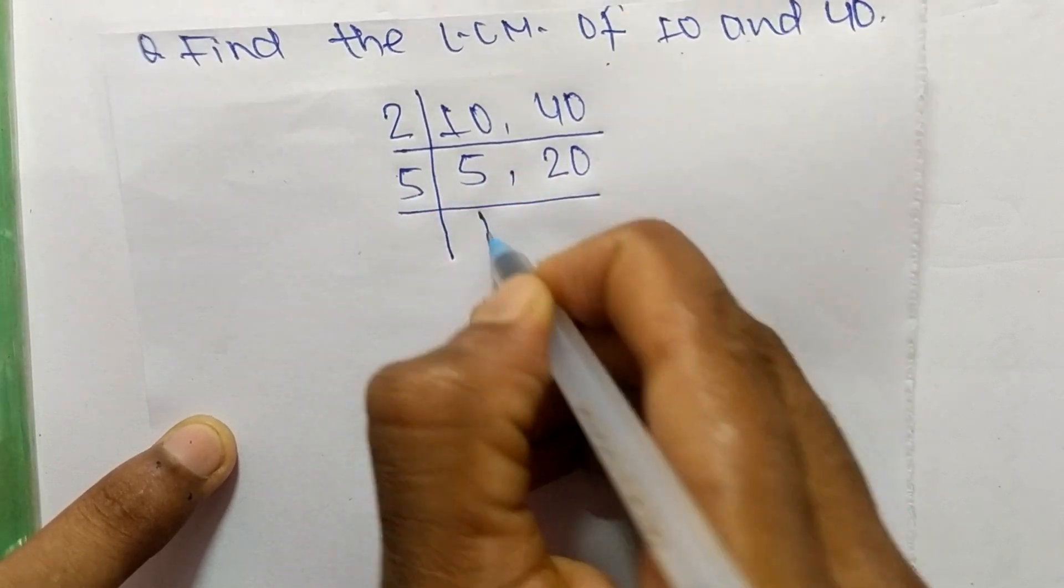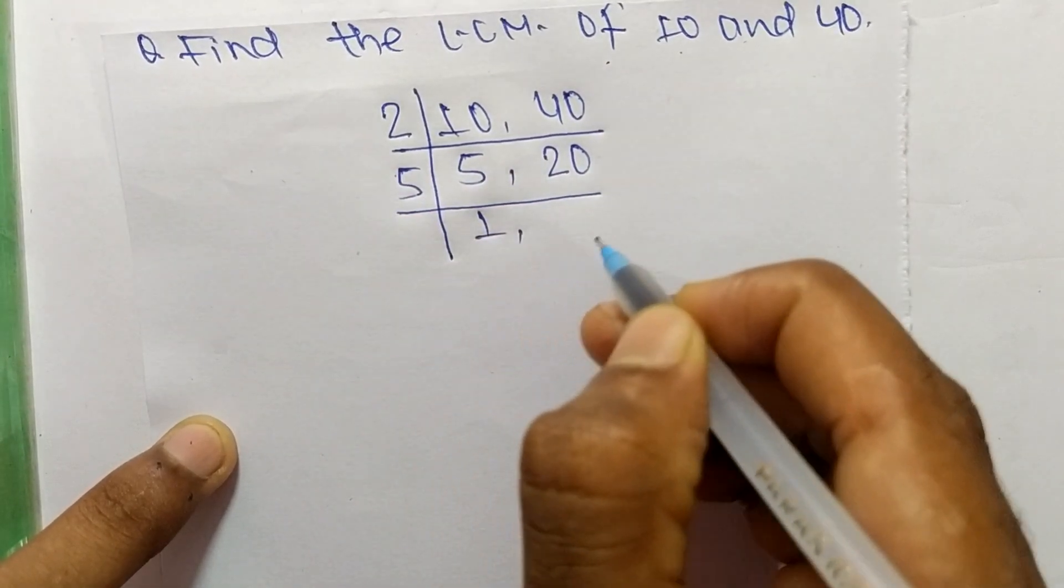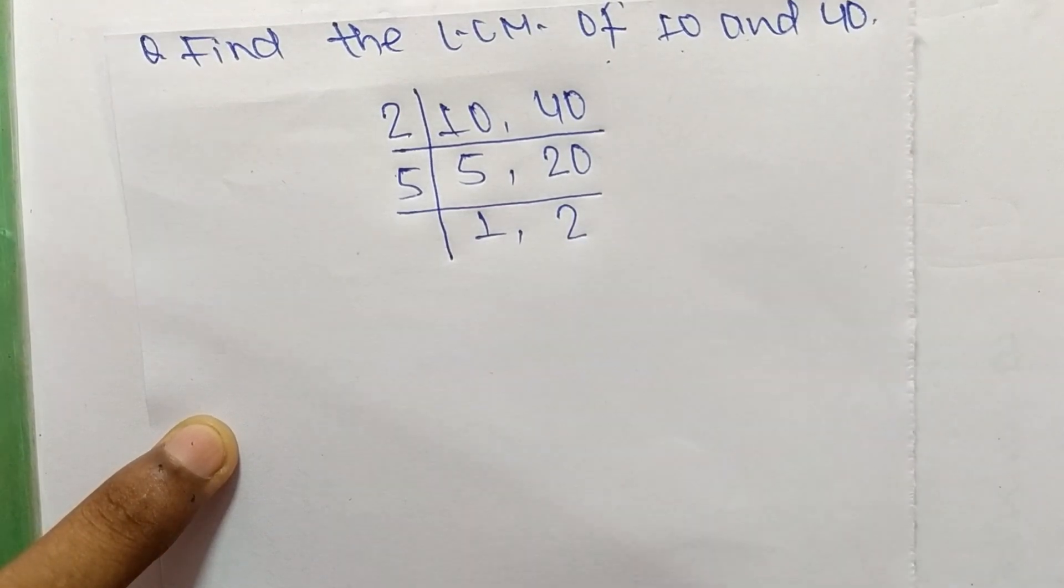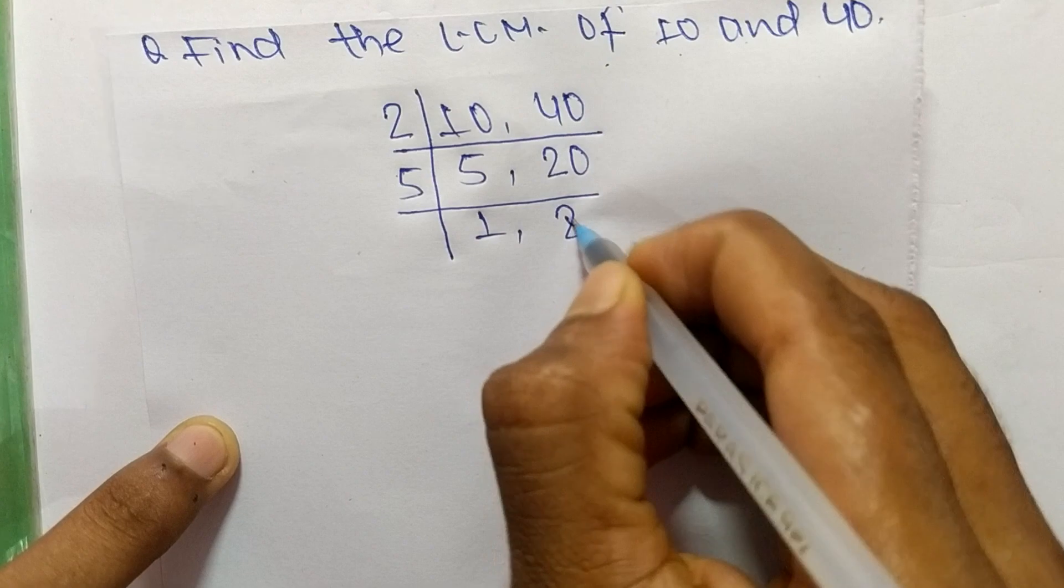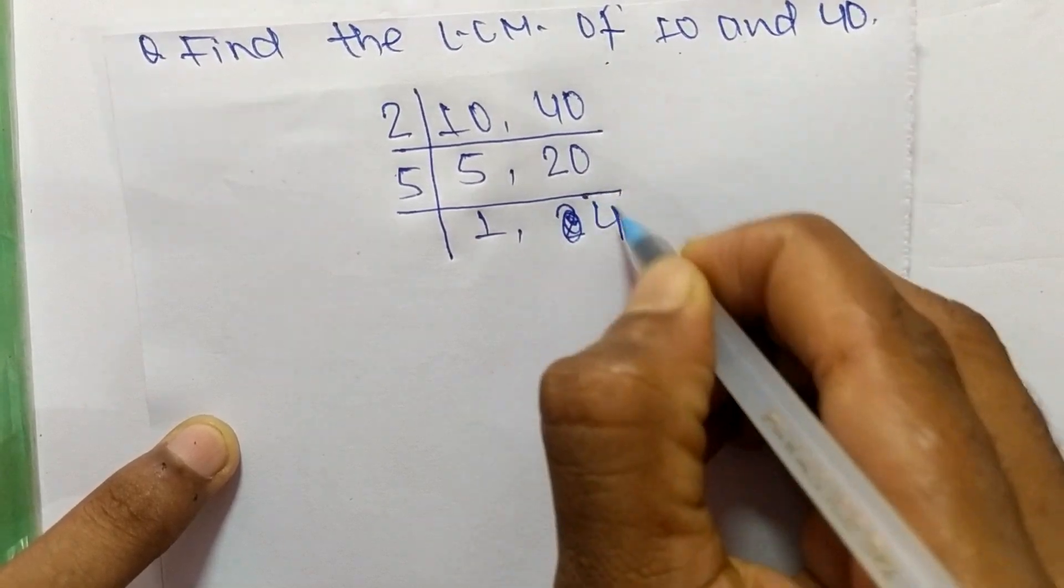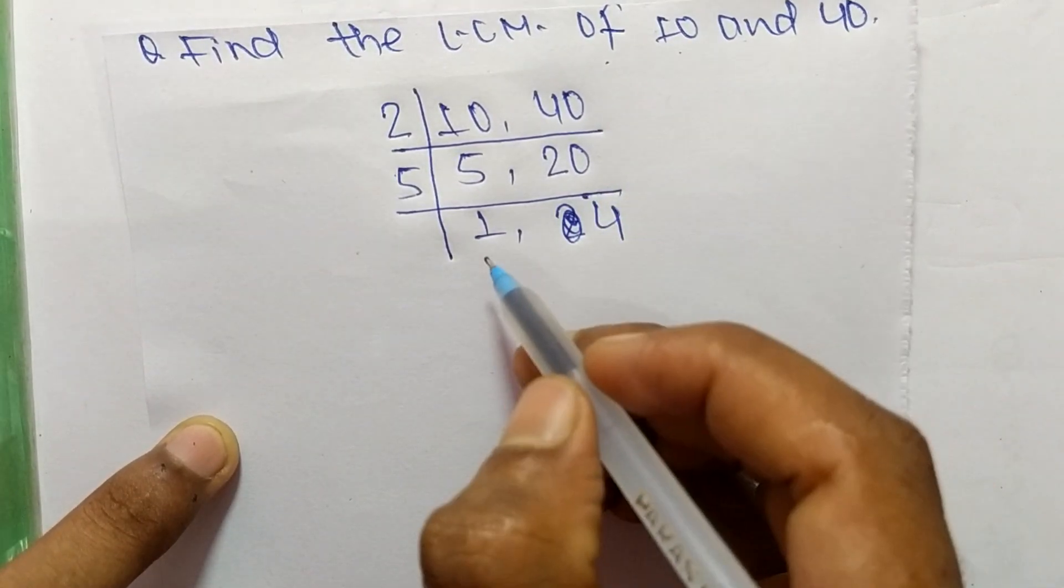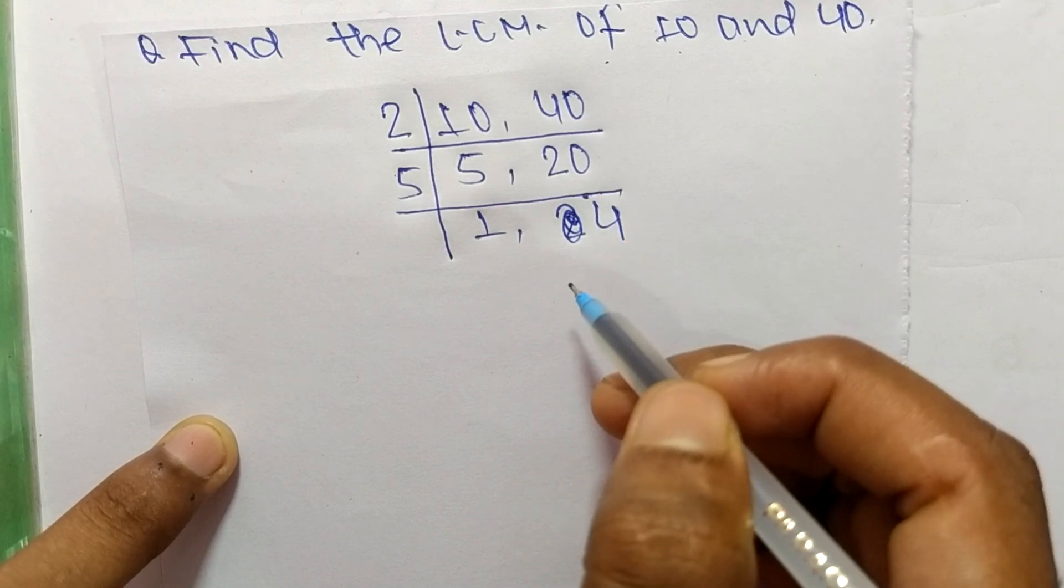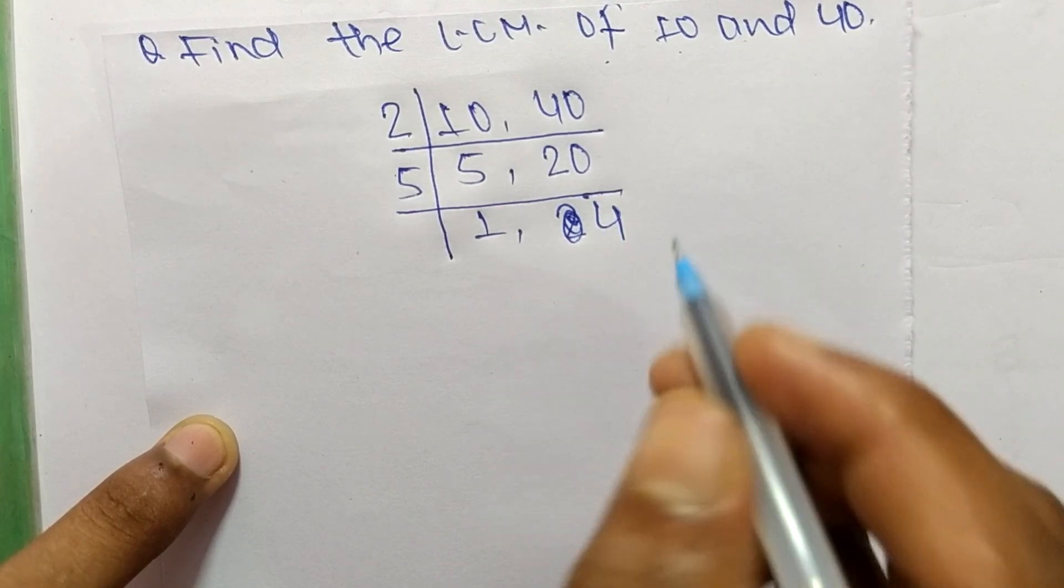is 5. So 5 times 1 means 5 and 5 times 4 means 20. Now we have 1 and 4 which are not exactly divisible by the same number, so